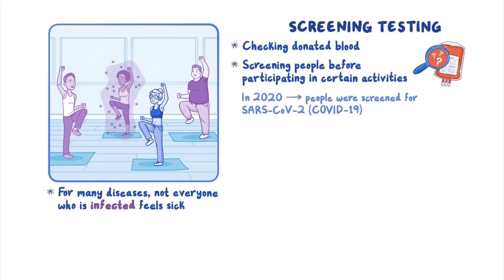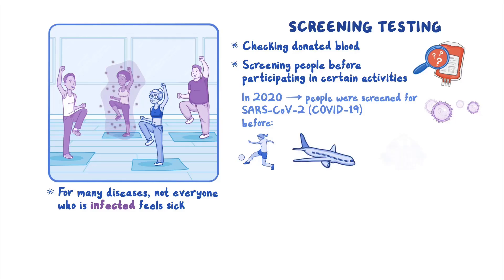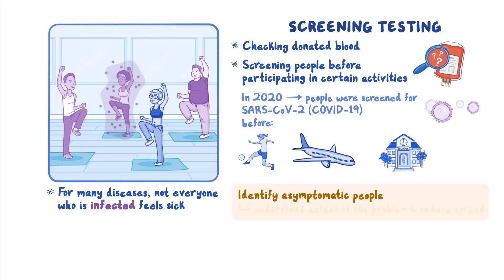In 2020, many people were screened to see if they were infected with SARS-CoV-2, the virus that causes COVID-19, before participating in sports, traveling on an airplane, or even going to school. Screening helps to identify asymptomatic people who may pose a risk to others. Public health experts can use this information to understand the extent of the problem and to take measures to reduce the spread of disease.